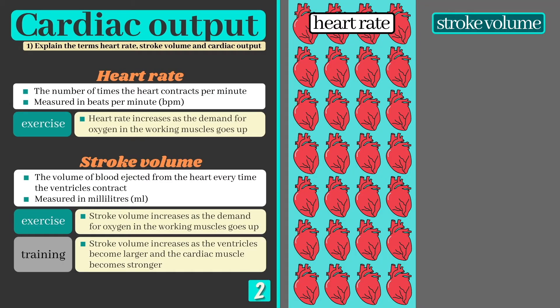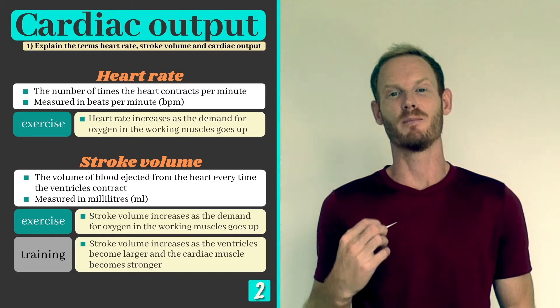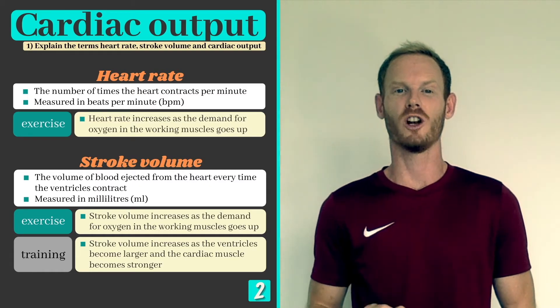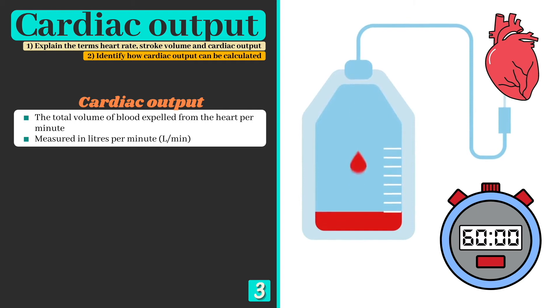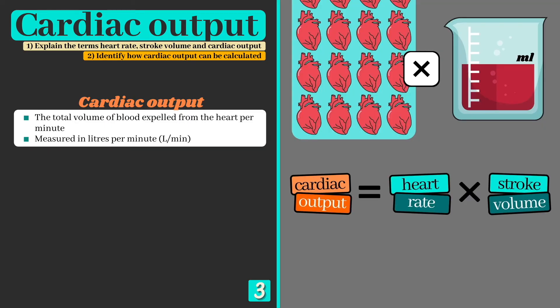Since heart rate is the number of times the heart beats per minute and stroke volume measures the amount of blood ejected each beat, we need to take both into account to determine the total volume of blood being transported around the body. Cardiac output can be defined as the total volume of blood expelled from the heart per minute, in litres per minute. It can be calculated by multiplying heart rate by stroke volume, and gives us a far more accurate picture of an individual's cardiovascular fitness.